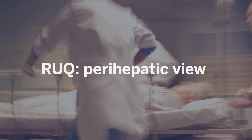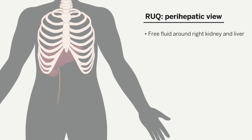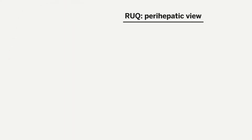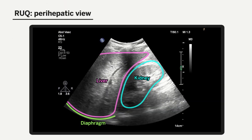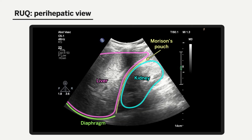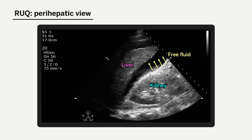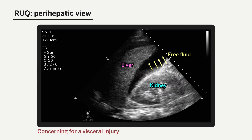The right upper quadrant, or peri-hepatic view, is used to assess for free fluid in the space between the liver and the right kidney. To obtain this view, we place the probe in the mid-axillary line on the right side between the 8th and 11th intercostal space, with the indicator facing towards the 12 o'clock position or the patient's head. This view is most useful for the assessment of free fluid in the peri-hepatic space, also known as Morrison's pouch, as depicted in this image. This example depicts fluid in the peri-hepatic space as indicated by the yellow arrows, and an image such as this is very concerning for a visceral injury.